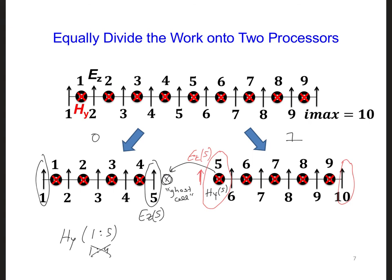This means before the HYs are updated, we need to send EZ5 here from processor 0 over to processor 1. And the best way to store that value in its proper place is to make the EZ array on processor 1 extend from I equal 5 to 10 instead of just 6 to 10.